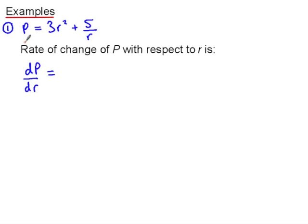So in this example, we have P given in terms of R, and so the rate of change of P with respect to R, dP by dr, is 6R.